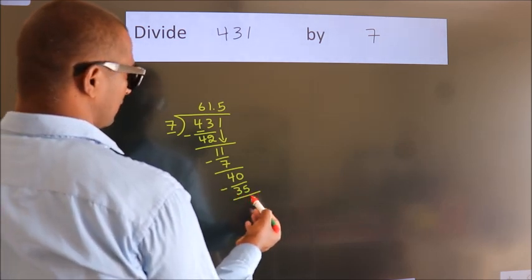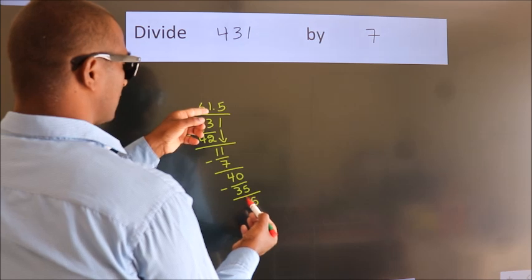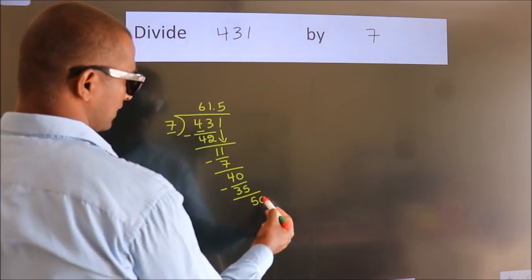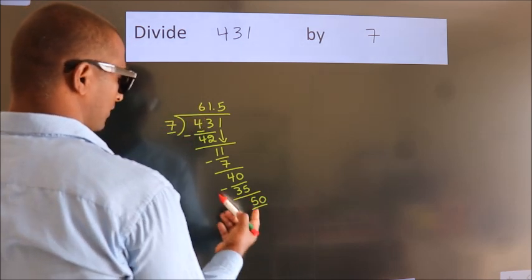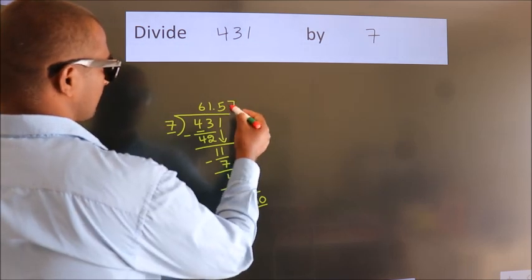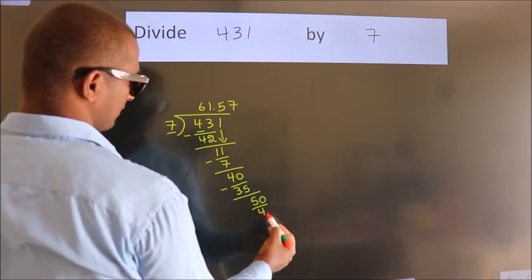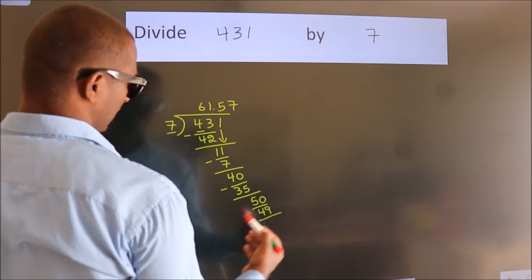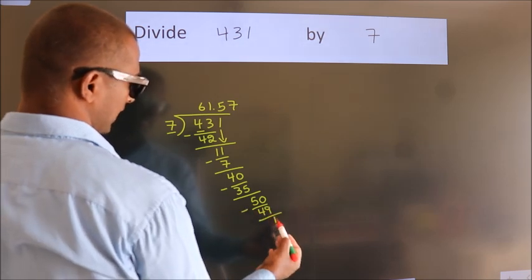After this, we already have the decimal. So directly take 0. So, 50. A number close to 50... Now we subtract. We get 1.